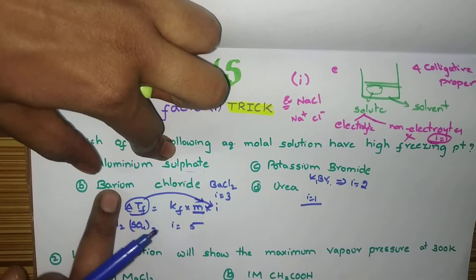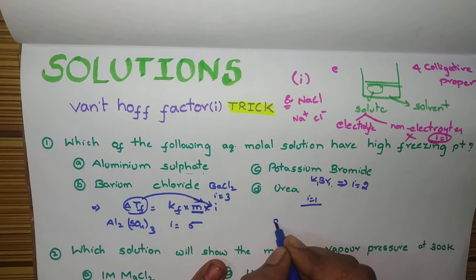So, A is greater than B is greater than C is greater than D. That's it.